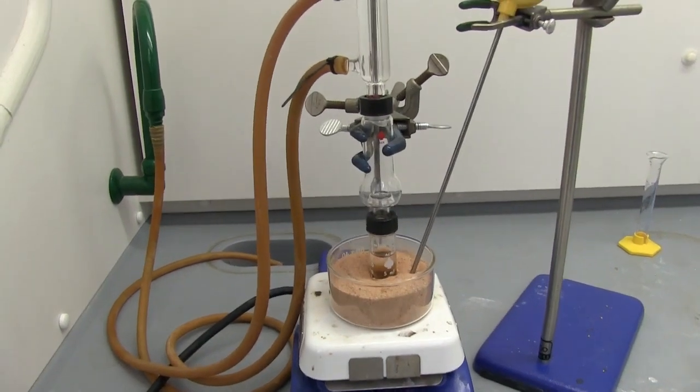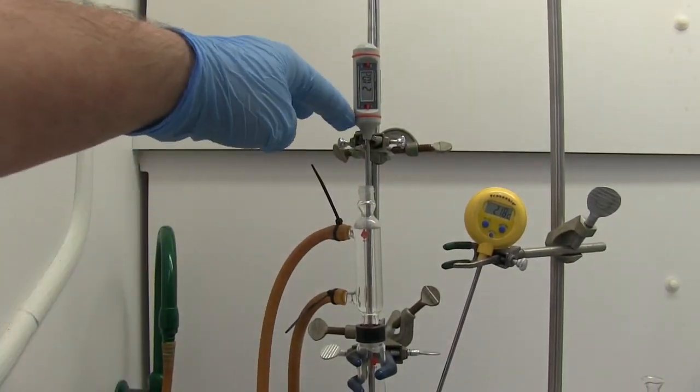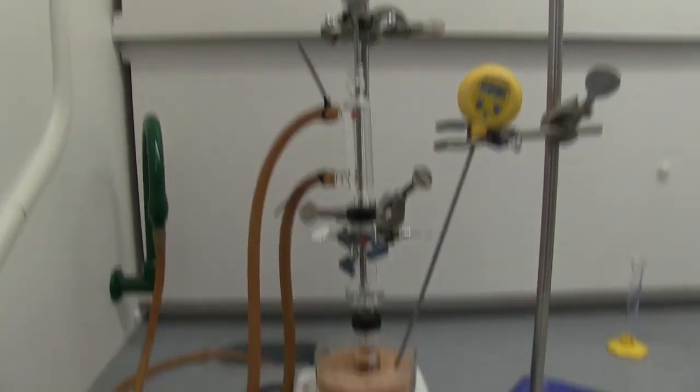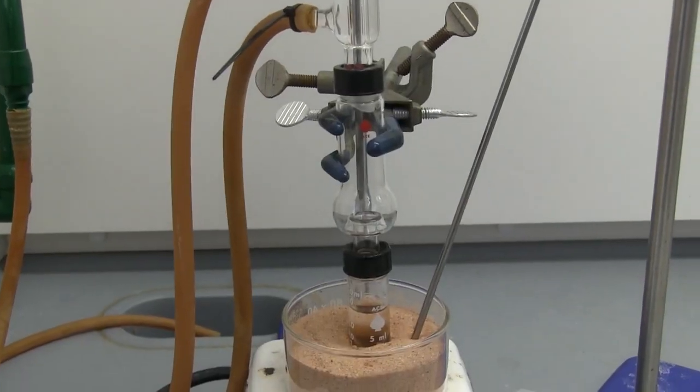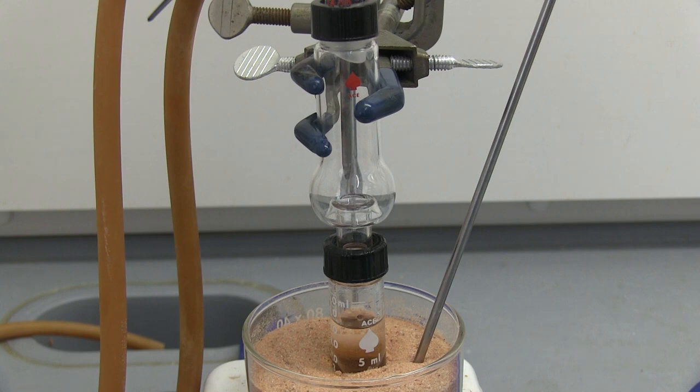Just to show you the setup, we have our thermometer using a clamp just to hold it at the right level, and now we are going to do the distillation. I've turned the heating on, we're going to keep the temperature of the sand around 90 to 110 in between there. And we want to collect the distillate that happens when it's 30 to 45 degrees Celsius.